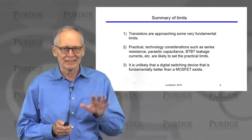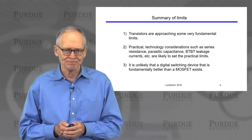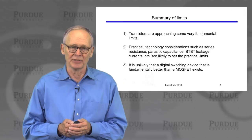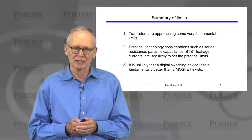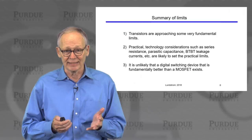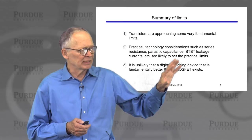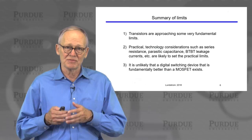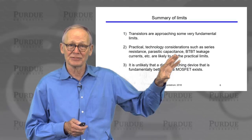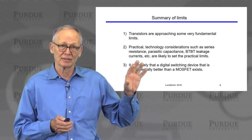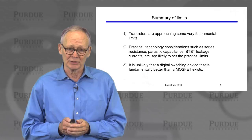We're relatively close to some fundamental limits, and it's harder and harder to push closer. Key points: transistors are operating really quite close to some fundamental limits. There are practical issues — series resistance, parasitic capacitance, various tunneling leakage currents — that make it difficult to push even deeper towards these fundamental limits. Our arguments on these limits can also be established by very general thermodynamic and quantum mechanical arguments, so they apply not just to our MOSFET but to any switching device we can conceive of. It will be difficult to even replace the MOSFET with another device and get significantly closer to these fundamental limits.